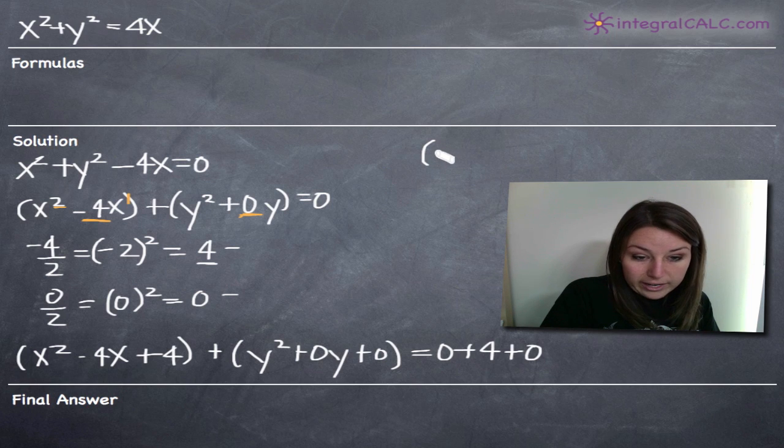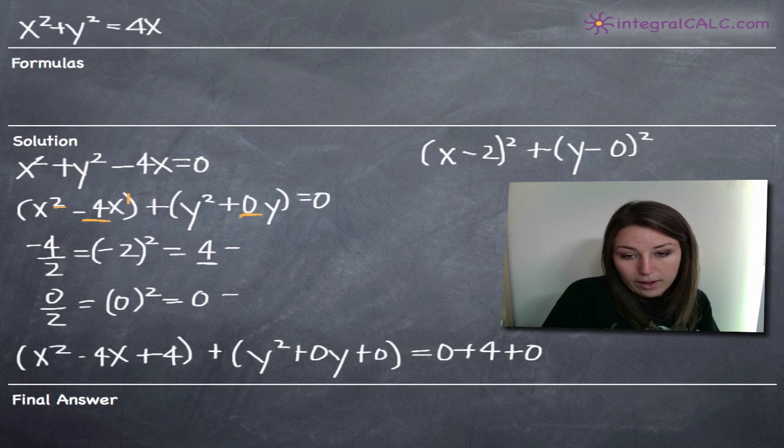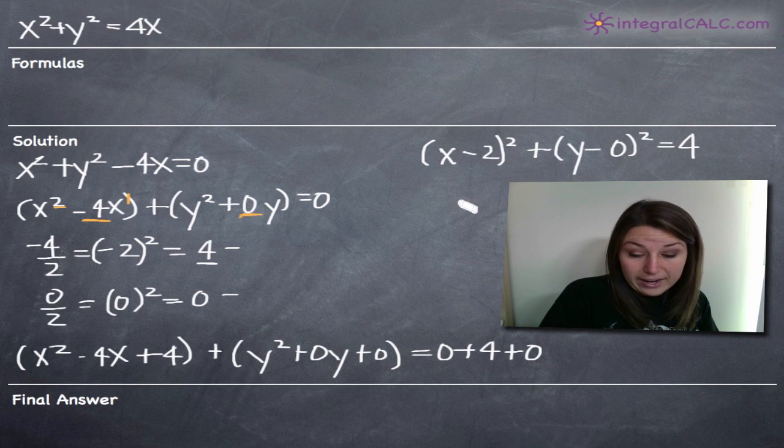So for x, we're going to get x minus 2 squared. x minus 2 squared will give us x squared minus 4x plus 4, which is what we have. And then for y, it's going to be y minus 0 squared, because we have plus 0y plus 0, so y minus 0 squared. And then we'll get 4 on the right-hand side.